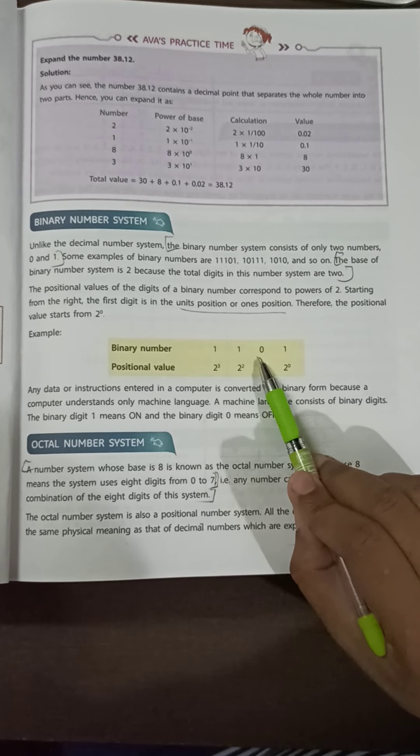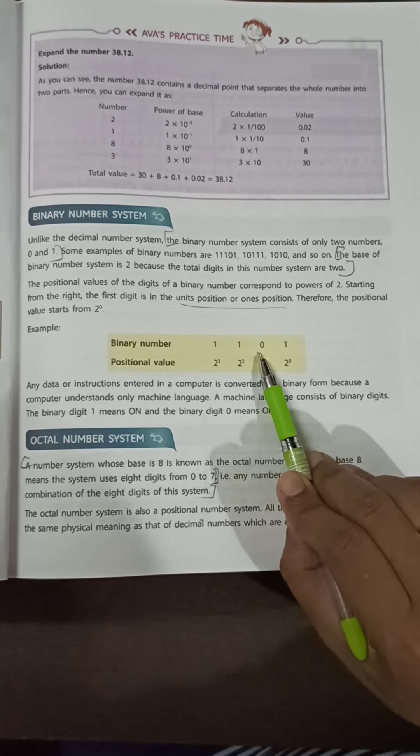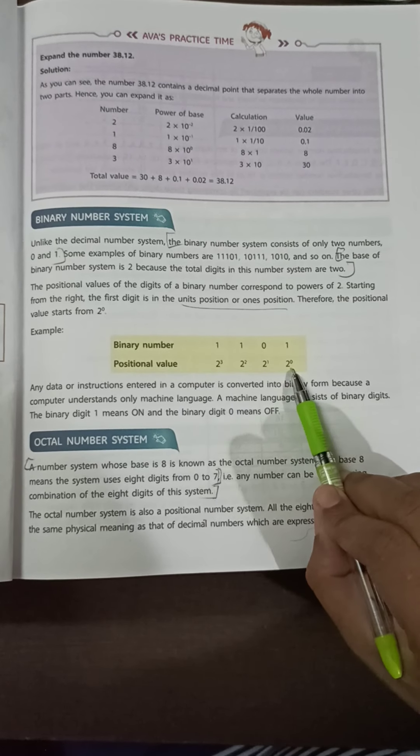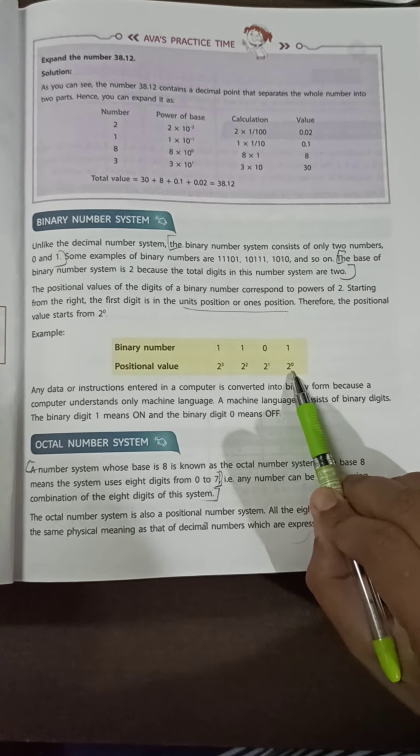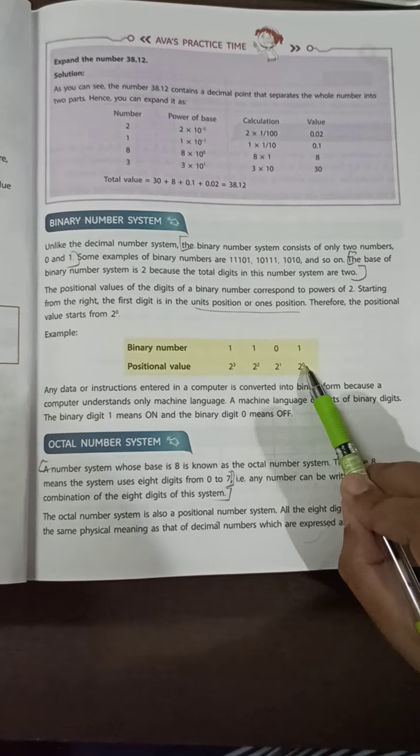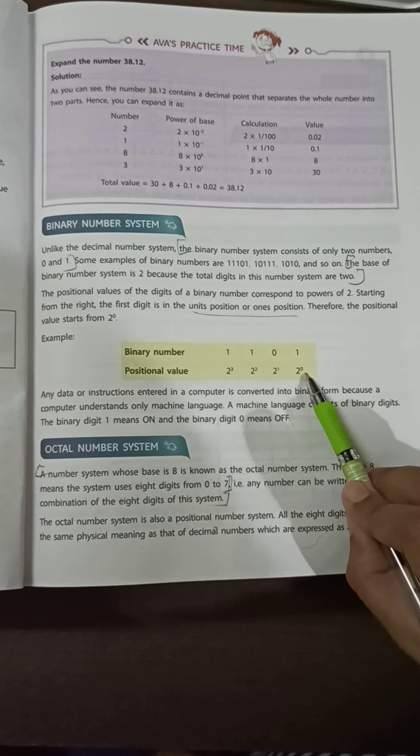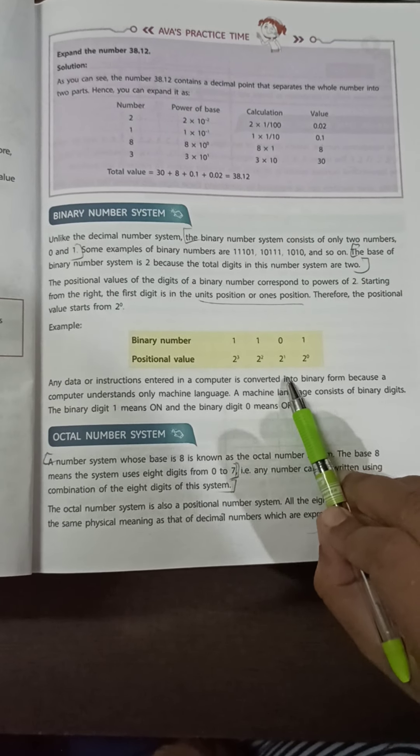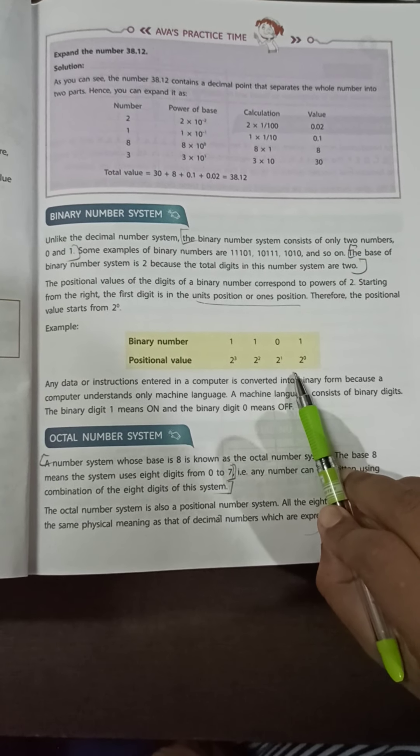For example, only 1 and 0 are used in the binary number system. The positional value also starts from 0, starting with power 0. In that way, you have to find the binary number system value.